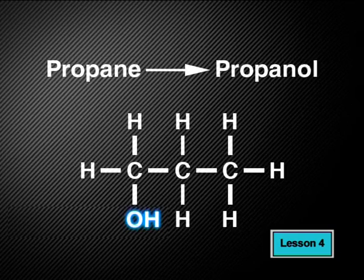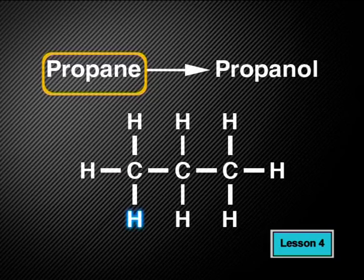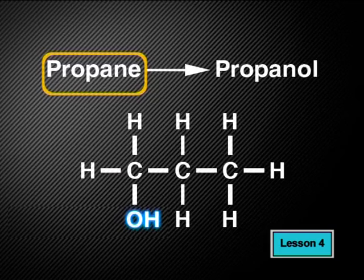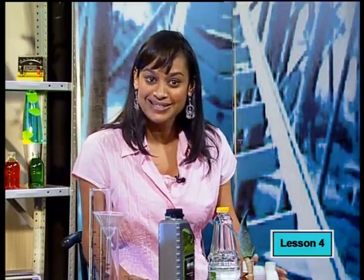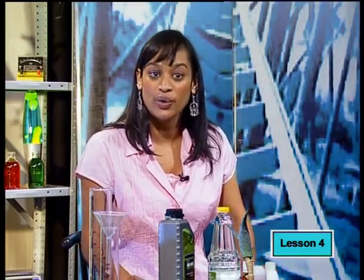Alcohols are named by changing the end of the backbone molecule from the letter E to the letters OL. In this case, the backbone molecule is propane. Propane consists of only carbon and hydrogen. But when one hydrogen atom changes to hydroxyl, we have an alcohol. So the name changes from propane to propanol. Remember the rules for naming alkenes and alkynes — the same rules apply for alcohols, to show where the OH group is.